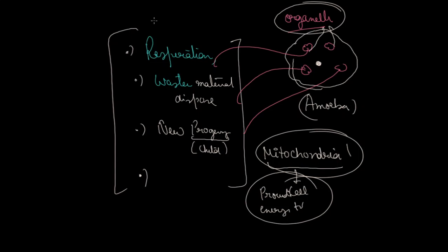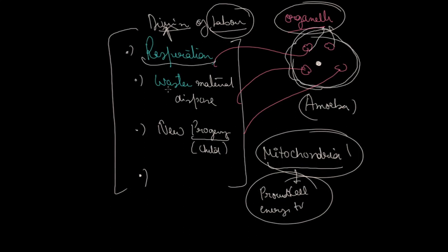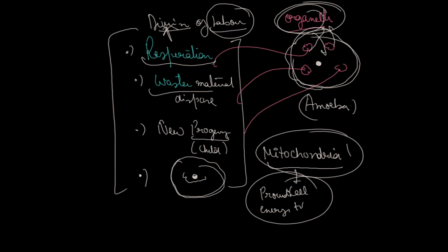So the cell functions by division of labor. Every organ inside the cell is different, and in all cells each organelle has a different function. In the next video we will read about the structure of the cell — what is the cell membrane, what is the nucleus, and what is the cell structure. We will also talk about cell organelles and how they work. So this video was your introduction to the function of the cell. It was important on a concept basis, so you have to listen carefully. We'll see you in the next video, take care.